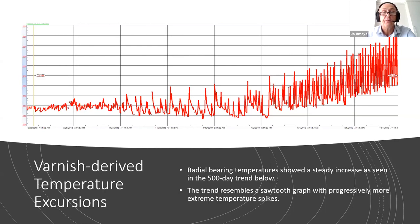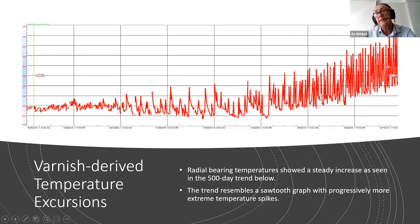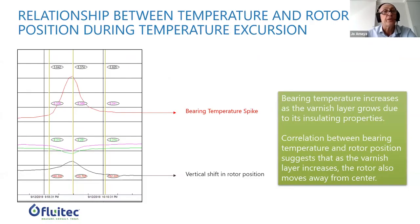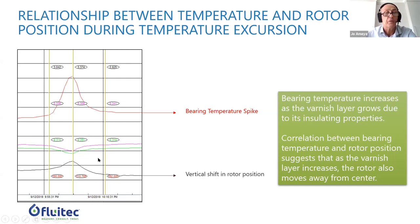Here is another good example showing a 500-day trend. You can again recognize these peak increases over time, and if you draw a regression line you can see the increase occurring. You also see this sawtooth graph, and we often receive the question: why is this typical? Can we explain this sawtooth graph with these progressively more extreme temperature spikes? Yes — to understand that, we need to combine the temperature relationship together with the position of the rotor.